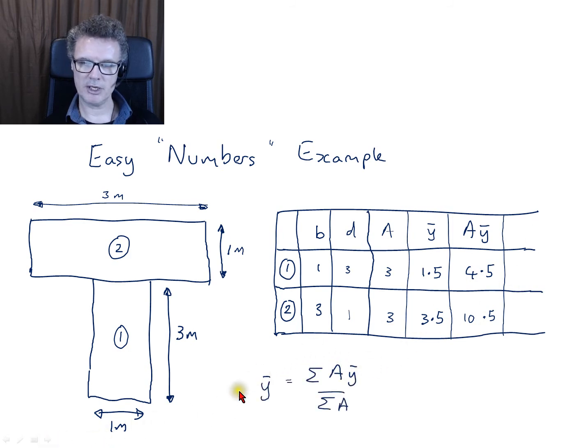And now I'm ready to apply my neutral axis formula. So we're going to add up all the A times the centroids. So that's going to be this column here. And then divide it by all the A's added together. So that's going to be that column there. So we take the 4.5 plus the 10.5 divided by 3 plus 3, and we get 2.5.